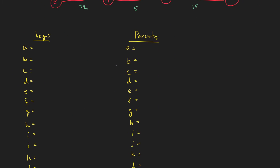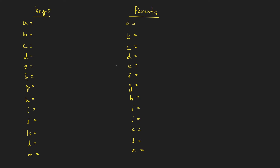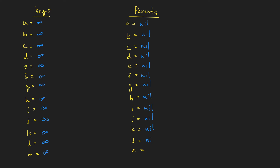Let's look at the keys and parents structure. All the keys start off at infinity, and we're going to try to find lesser and lesser key values — that's what the edge weights represent — so that we can find this minimum spanning tree. All the parents are nil in the beginning. Everything is set up in our priority queue. This video may be slightly longer than usual so we can get the point across and do some extensive practice.